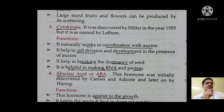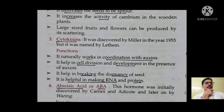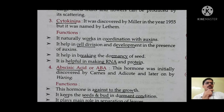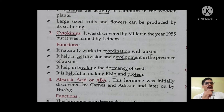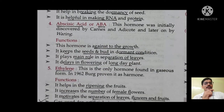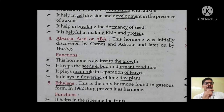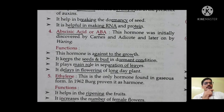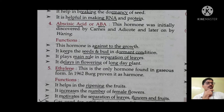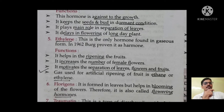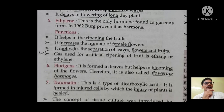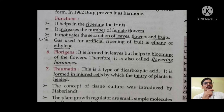Next is cytokinins — very important. It naturally works in coordination with auxins. It helps in the growth of the plant, controls plant growth, helps in cell division and development, helps in breaking the dormancy of seeds, and helps in making RNA and protein. If a question comes from cytokinins, it will likely be about helping make RNA and protein and coordination with auxins. Next is abscisic acid — this hormone is against growth. It keeps seeds and buds in a dormant condition, and its main role is separation of leaves. It also delays flowering.